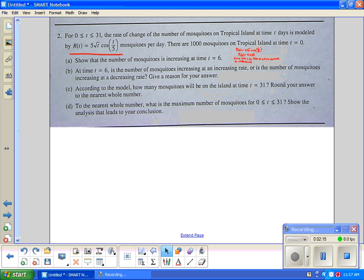Part B was not worth a lot of points yet, only worth 2. At time t = 6, is the number of mosquitoes increasing at an increasing rate or increasing at a decreasing rate? It's asking about the rate of change of the rate of change. So we gotta get the derivative.